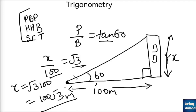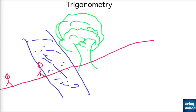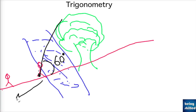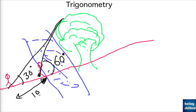Let's take a more complex problem. Suppose a person is sitting on the bank of a river and looks at a tree on the other side. The angle of elevation he forms with the tree is 60 degrees. When he moves farther from the tree, the angle he forms is 30 degrees, and this distance moved is 100 meters. We have to find both the width of the river and the height of the tree — let the width be x and the height be y.